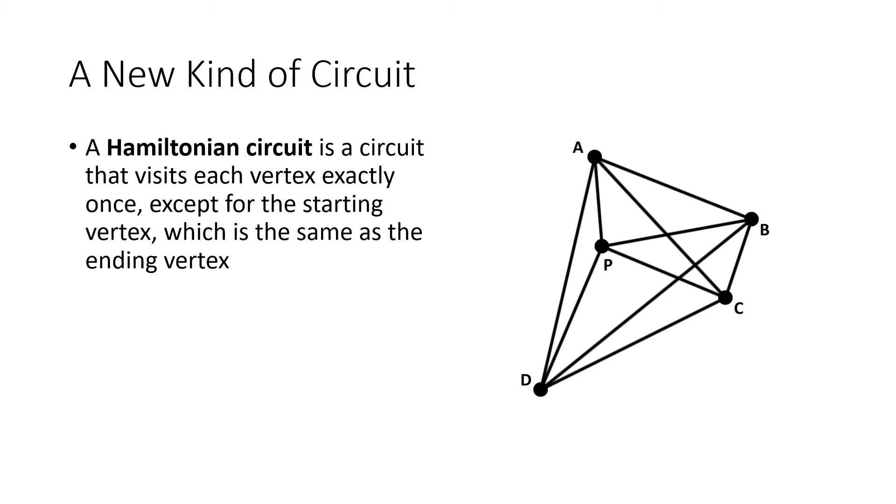A Hamiltonian circuit is a circuit that visits each vertex exactly once, except for the starting vertex, which is the same as the ending vertex. So in this case, our post office, that's our starting point. So we are going to visit that vertex twice, once at the beginning when we start our journey, and once at the end when we return back to the post office.